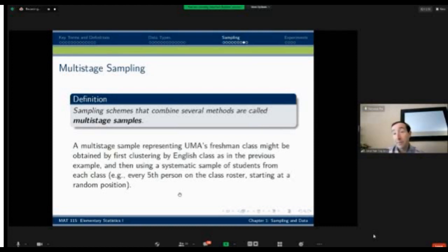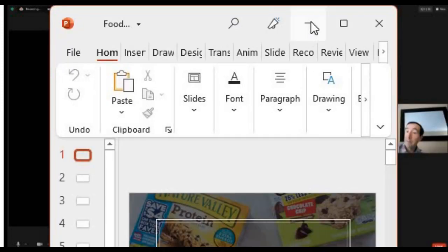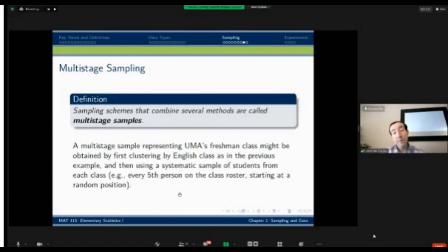The last thing, there are what are called multi-stage samples, and that's where I might involve multiple different pieces of this. A multi-stage example might mean I could cluster by English class to decide which sections of those classes to include in my sample, and then I can use a systematic sample to choose a subset from each of those chosen classes. So that really wouldn't be a cluster because I'm not including all of the students in those classes, and it also wouldn't be a systematic sample because I'm not including everyone in my sampling frame as an element of that list. It's a combination of those two things in successive steps, and that's the key idea of a multi-stage sample. It's one that combines more than one method at a time.